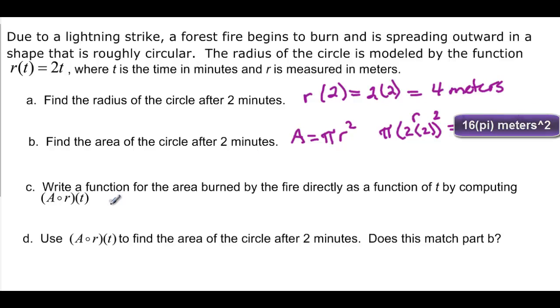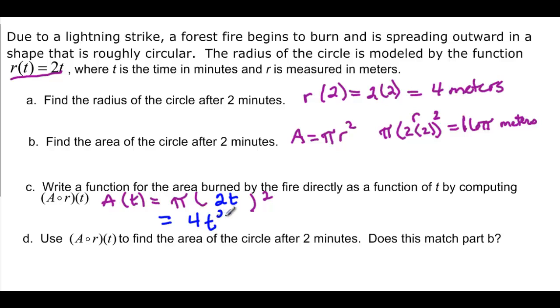So now it wants me to write the function a of r of t. I'm going to call it a of t. That means I'm going to, in the a function, I'm going to put in the r, and remember r up here is 2t. I have pi, and then I'm going to put my r in there, and I'm going to square it. My r in there is 2t. So if I simplify it, I'm going to have 2 squared is 4, t squared is t squared, times pi, and that would be my a.